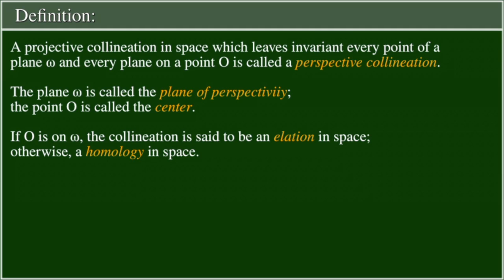The plane omega is called the plane of perspectivity. The point O is called the center. If O is on omega, the collineation is said to be an elation in space, otherwise a homology in space.